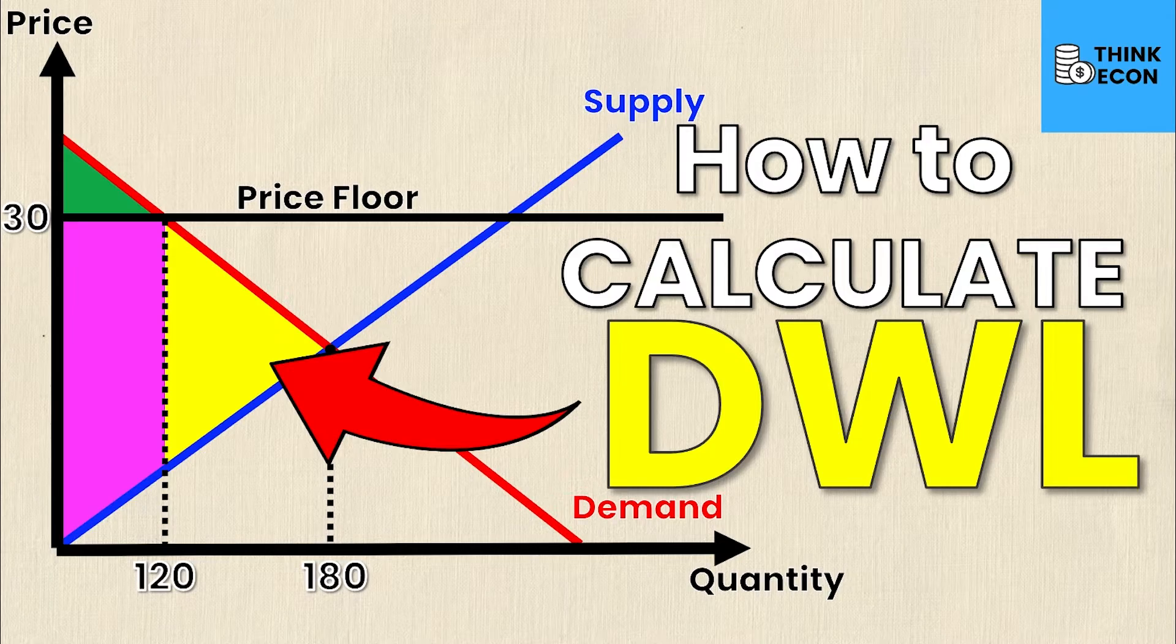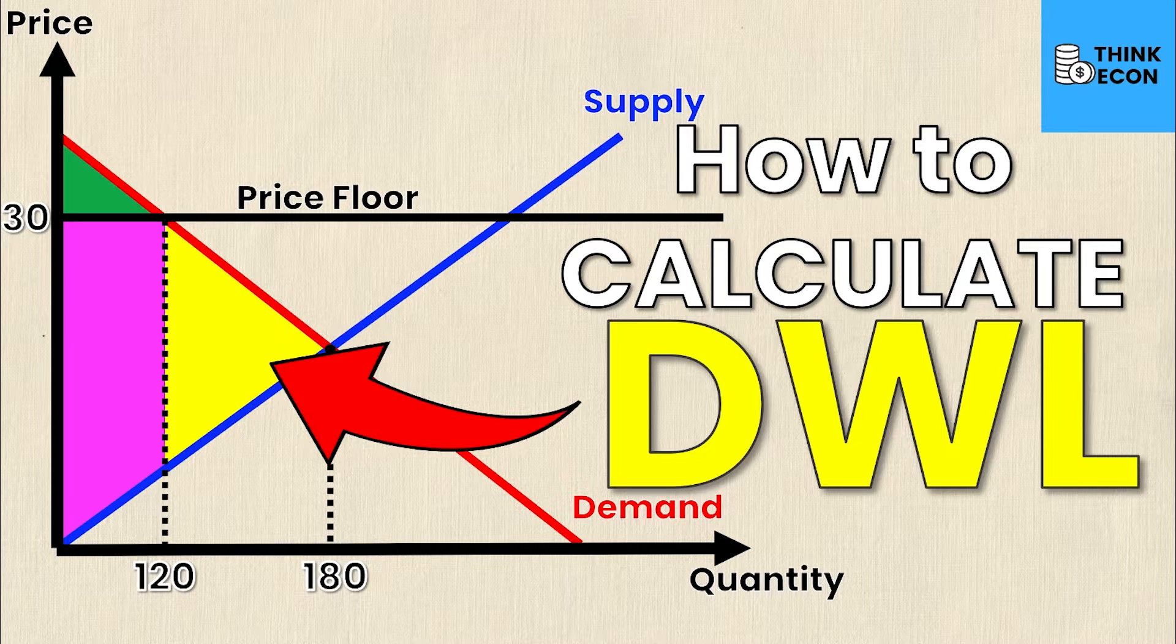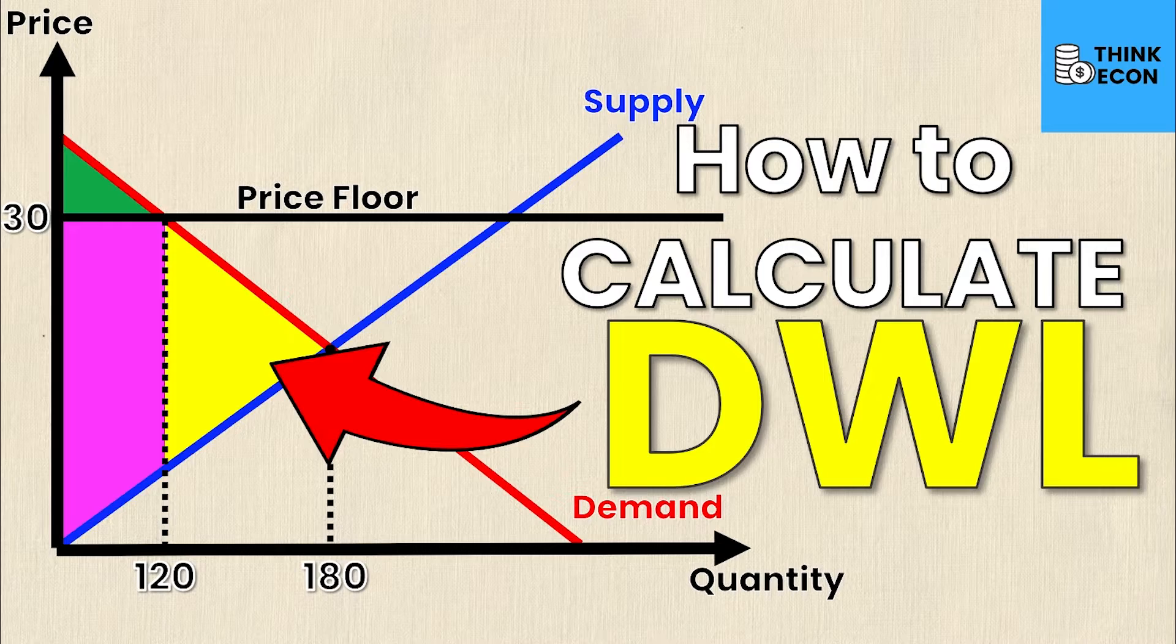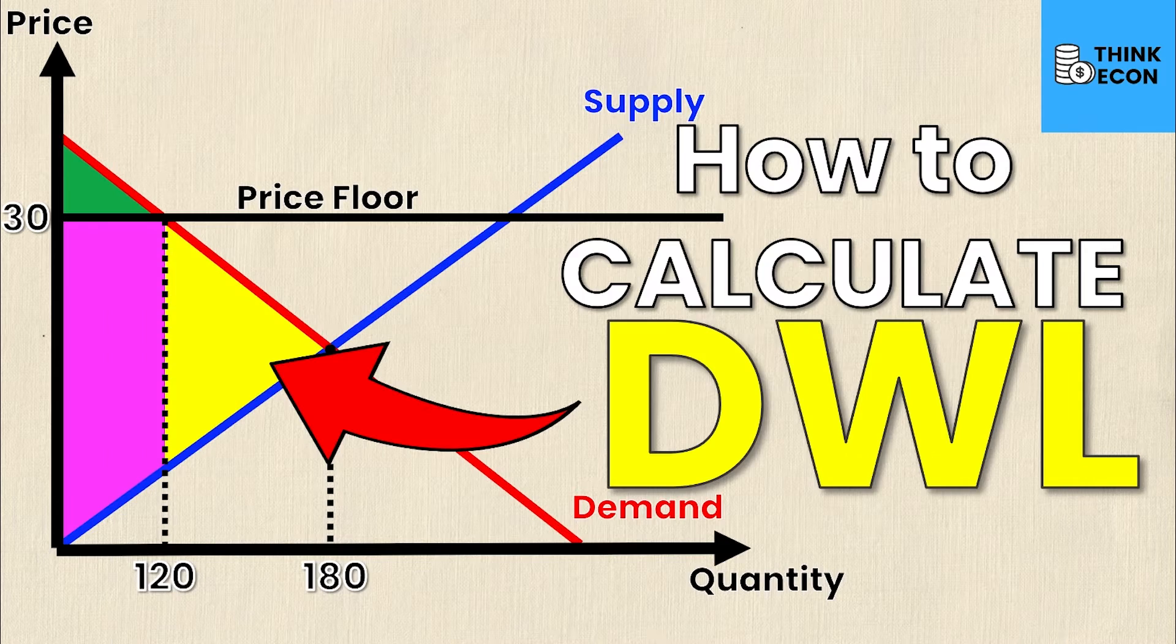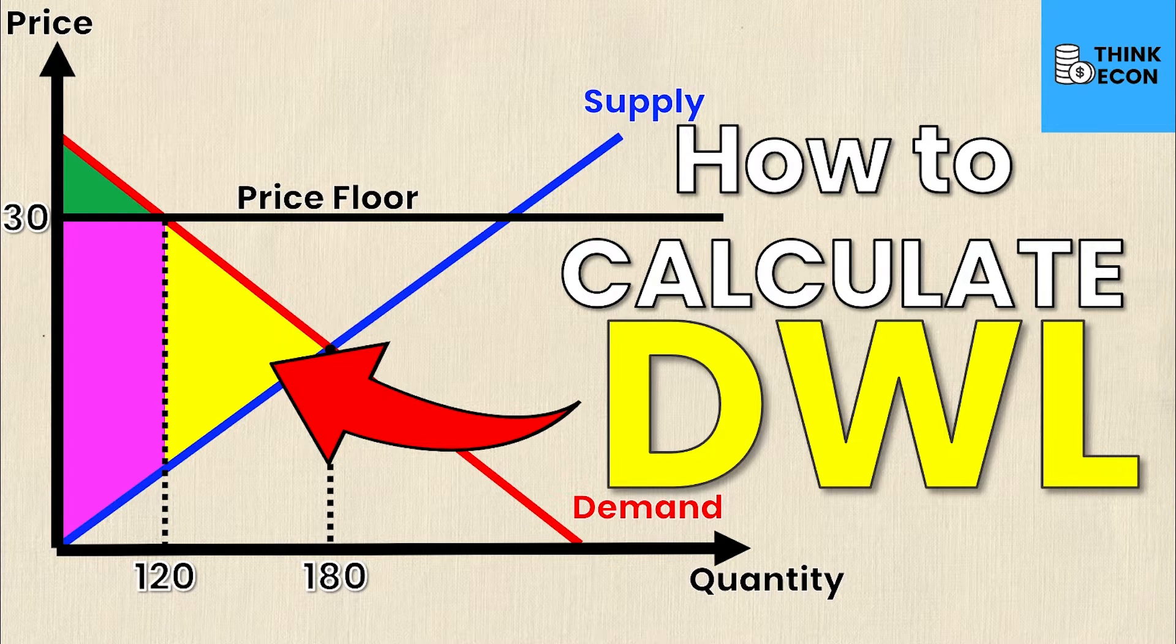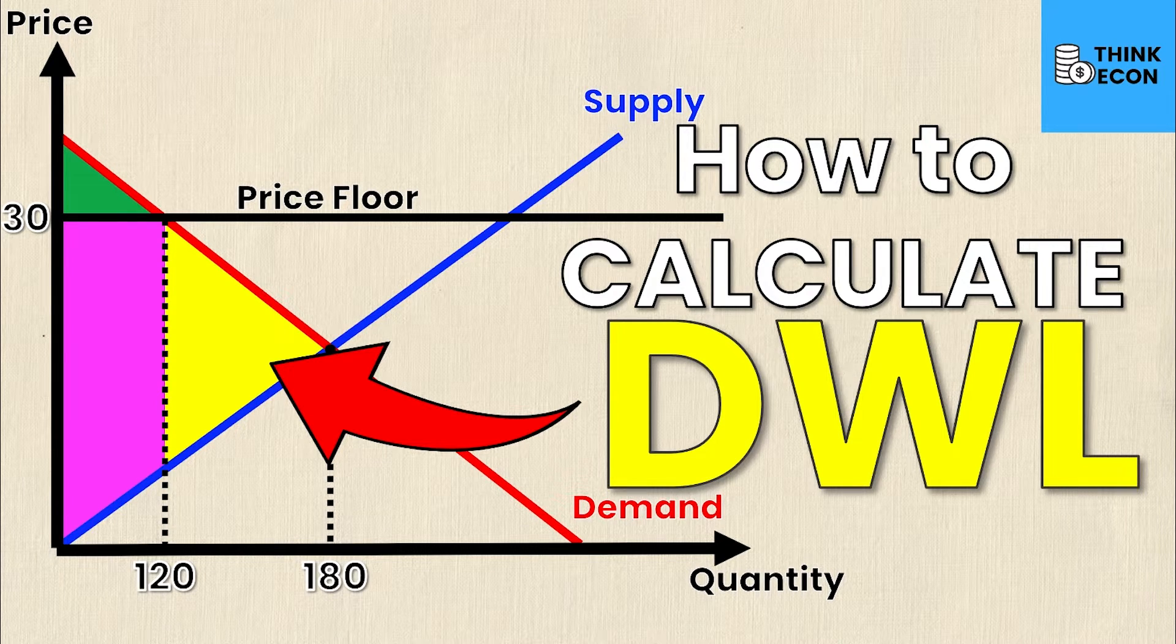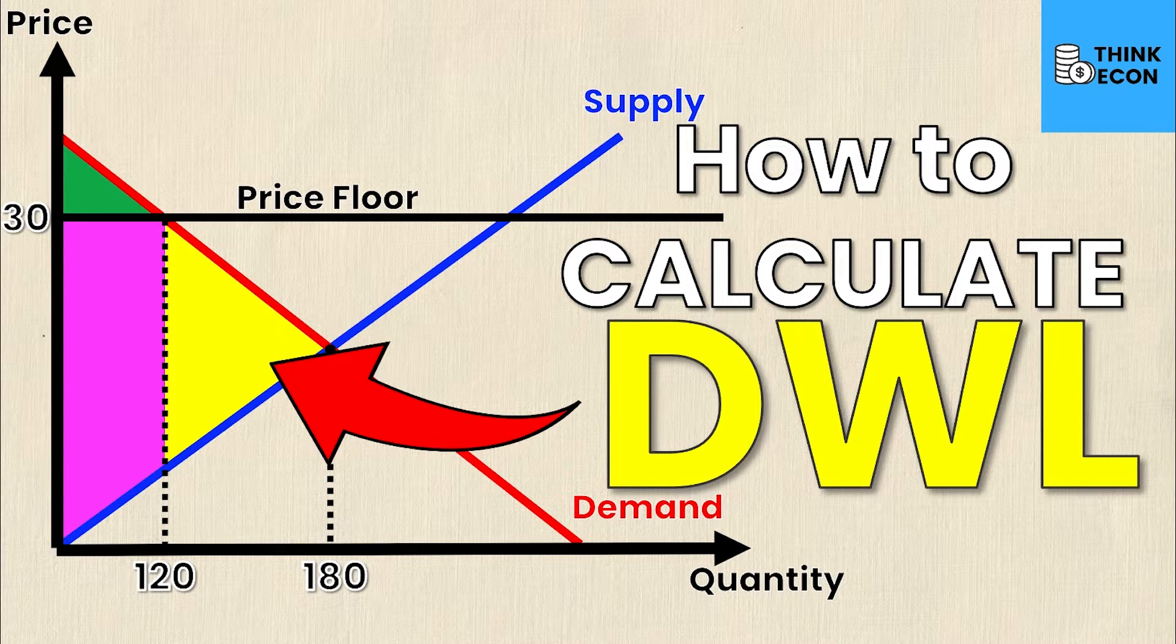When talking about deadweight loss it's important to understand two concepts that we've already covered on the channel, and that is producer surplus and consumer surplus. We have multiple videos dedicated to these concepts on the channel, so please feel free to check those videos out and then come back to this video once you feel like you have a grasp on those two concepts. The reason you need to know those concepts first is because deadweight loss is a loss in total surplus, and total surplus is just the sum of consumer surplus and producer surplus.